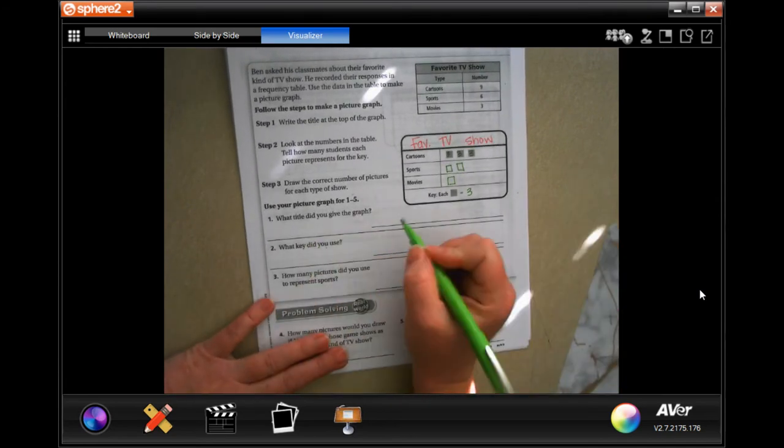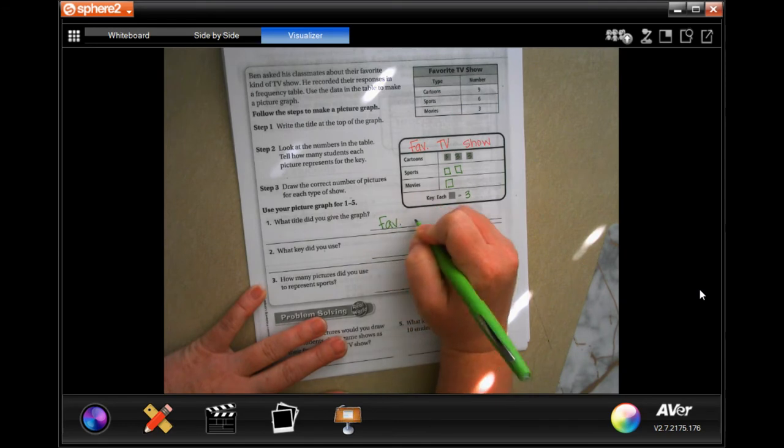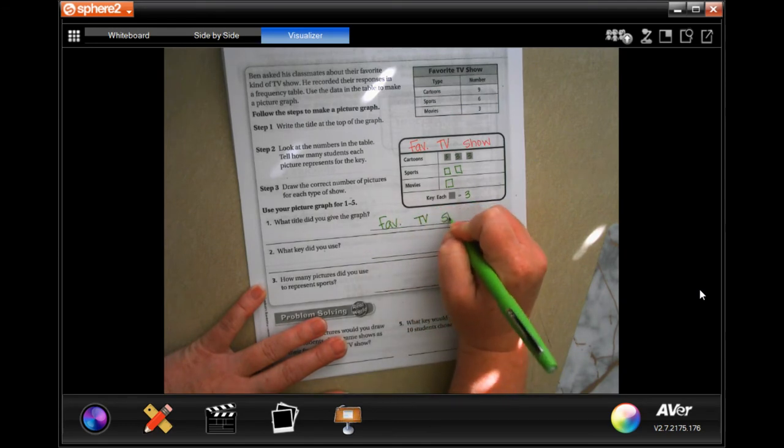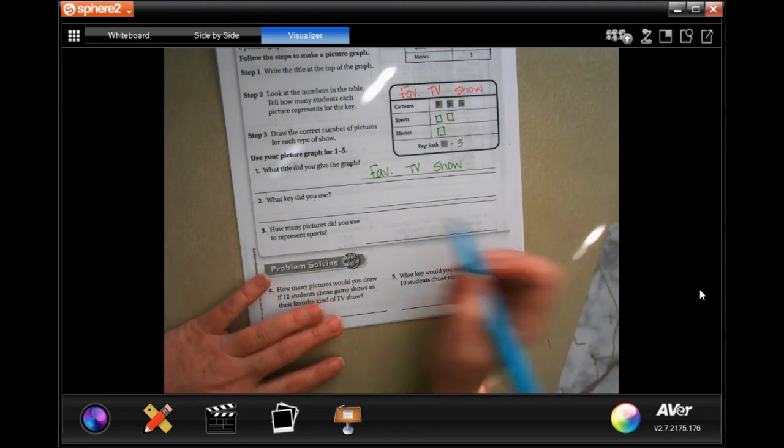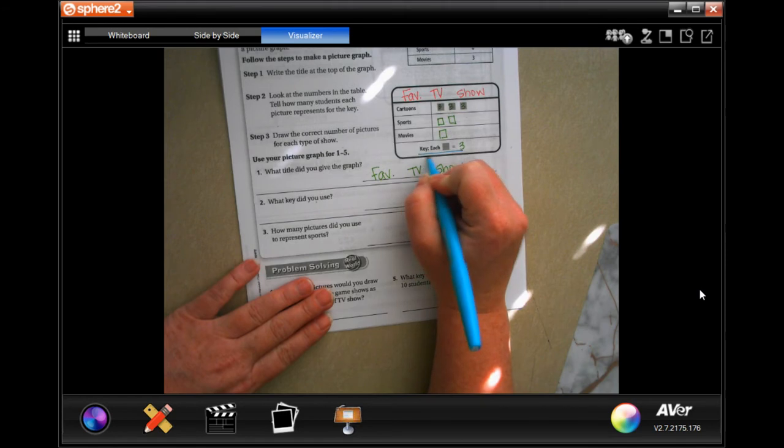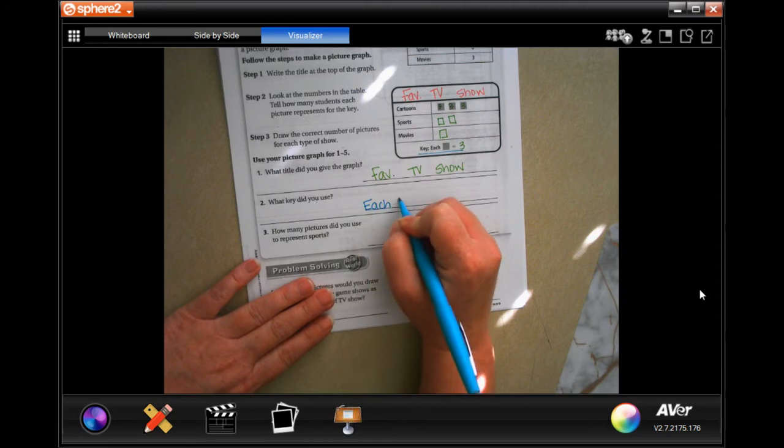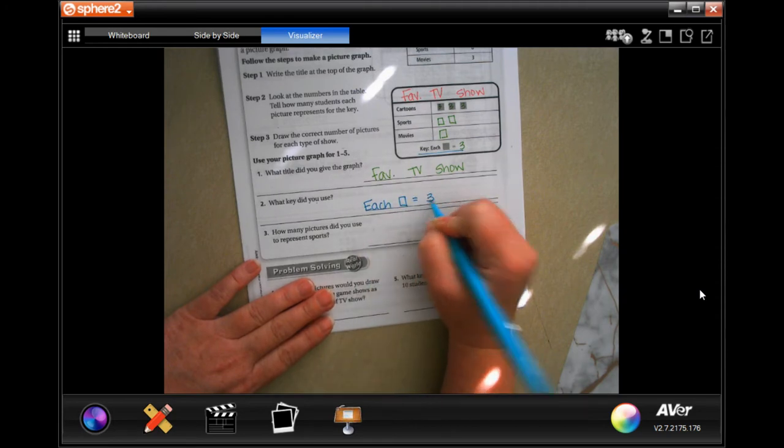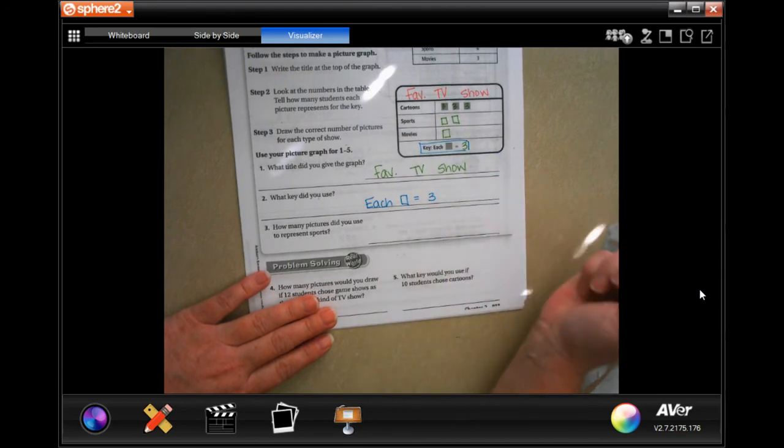So what title did you give the graph? Well, favorite TV show. What key did you use? Well, this is our key right here. So it's going to be each block equals three. It tells you what the key is. You're not changing it.